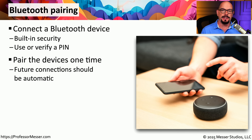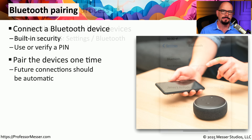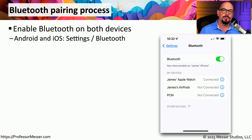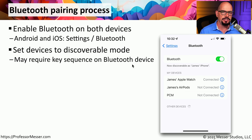Although the Bluetooth pairing process is very similar between devices, there may be nuances or differences depending on the device you're connecting to, so check your documentation to know the appropriate PIN or where to find that information. You would start the pairing process by enabling Bluetooth on both devices. On iOS or Android, you'll find this under Settings and Bluetooth. You would then set both devices to be discoverable by each other, which may require a specific key sequence or startup process.